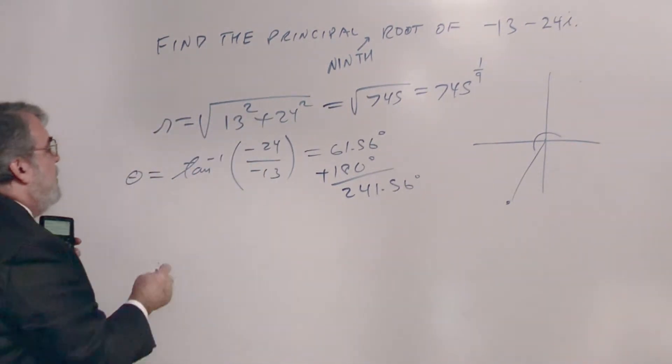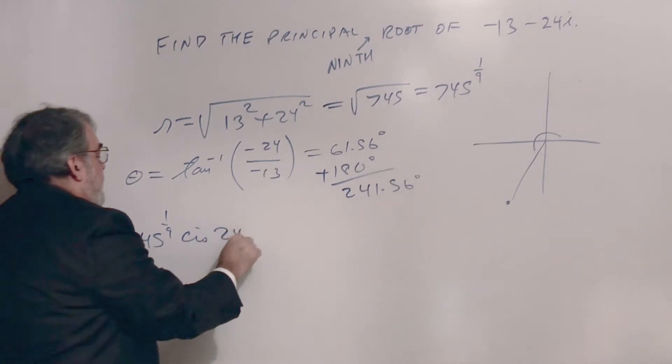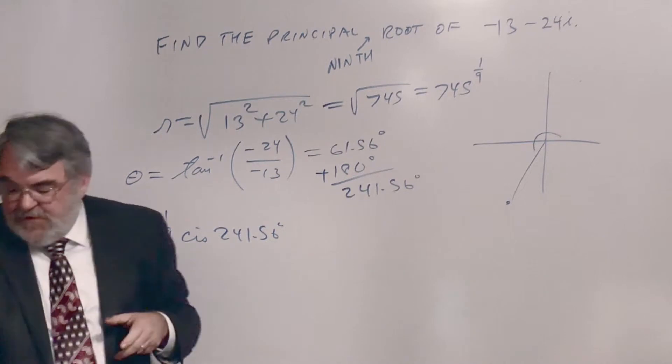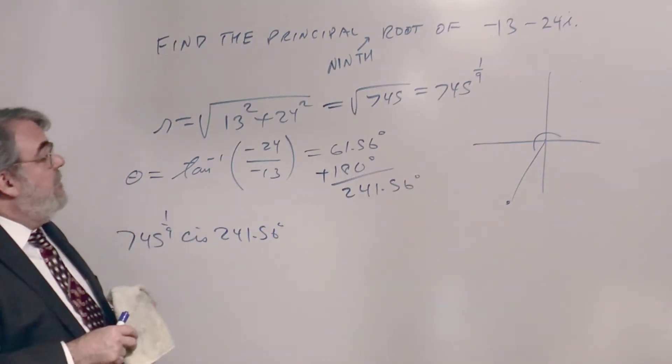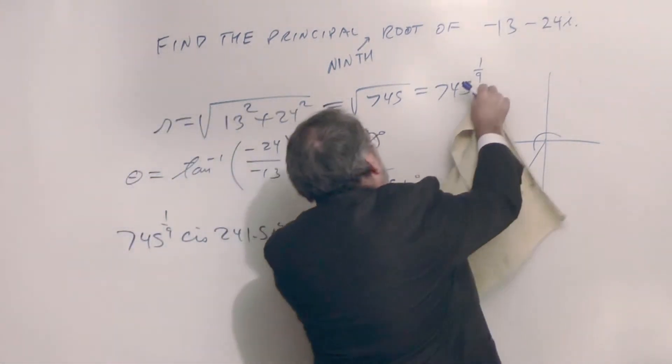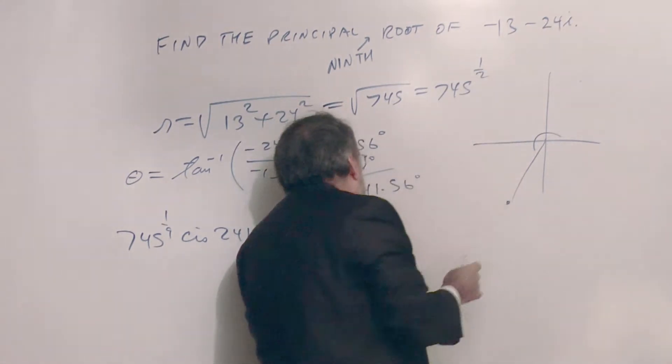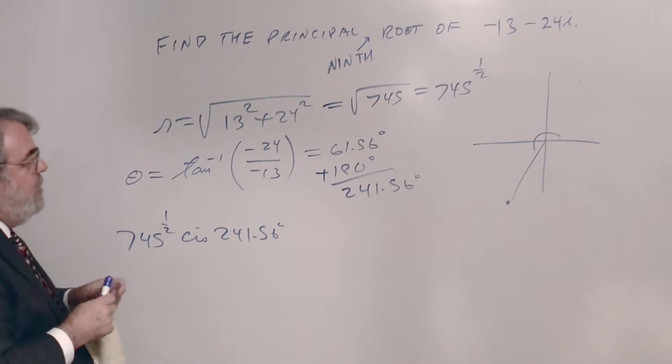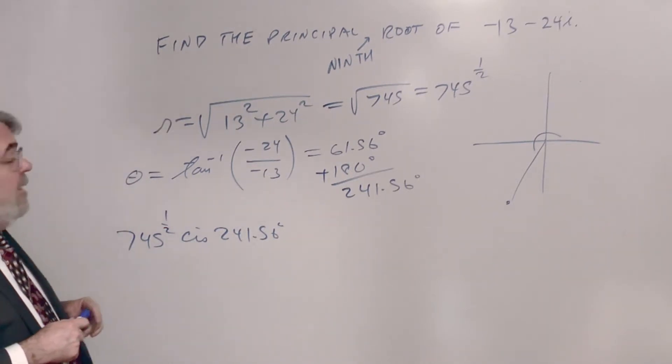So in polar form, we've got 745 to the 1/9th, CIS 241.56 degrees. And you know, I just see - you've probably been screaming at the YouTube video here - that's not 1/9th power, is it? It's 1/2 power. So sorry about that. 1/2 power, 1/2 power, there we go. Square root, not 9th root yet. So here is the polar form for our original complex number.